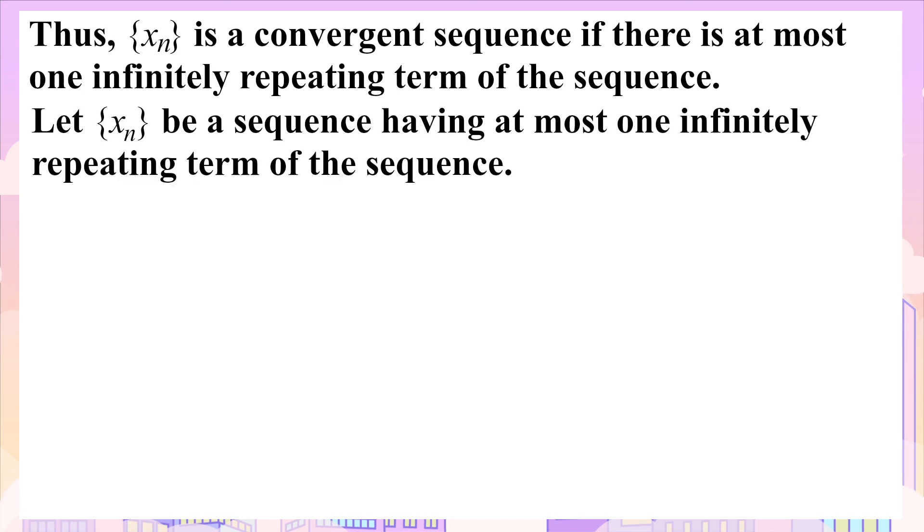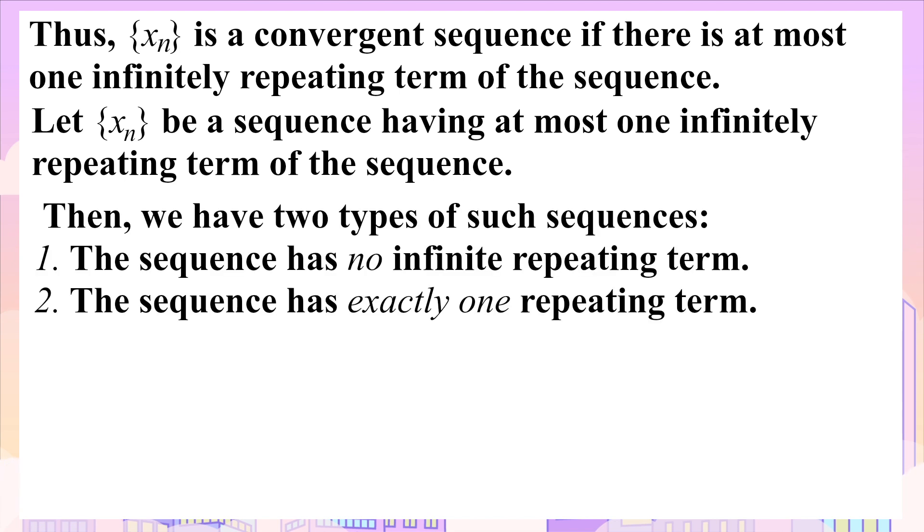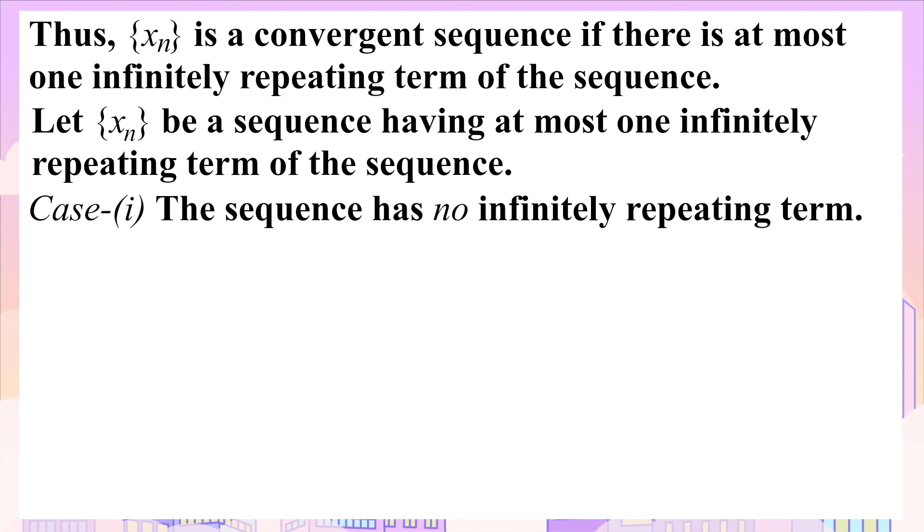To find this out, let {xₙ} be a sequence having at most one infinitely repeating term. Then there are two types of such sequences: one is the sequence which has no infinitely repeating term, and the other is the sequence which has exactly one repeating term. Let's discuss the case of the sequence having no infinitely repeating term.